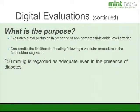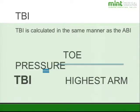We can also predict the likelihood of healing after a vascular procedure — whether the patient has a bypass or an amputation, we can assess if they're going to heal. A toe pressure of 50 mmHg or more is regarded as adequate for healing in the presence of diabetes. The toe brachial index is calculated in the same manner as the ABI: toe pressure over the highest arm pressure, always the highest arm pressure.